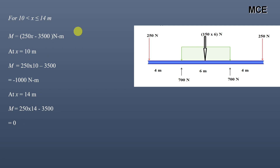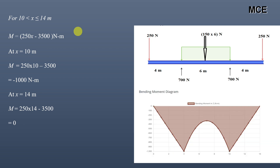At x equals 14, moment is zero. The moment diagram shows: moment equals zero at x equals 0, reaches minus 1000 newton-meters at x equals 4, the value at x equals 7 is minus 325 newton-meters (this portion is parabolic due to the UDL), returns to minus 1000 at x equals 10, and finally returns to zero at x equals 14. This is how you find the shear and moment functions along the length of the beam.